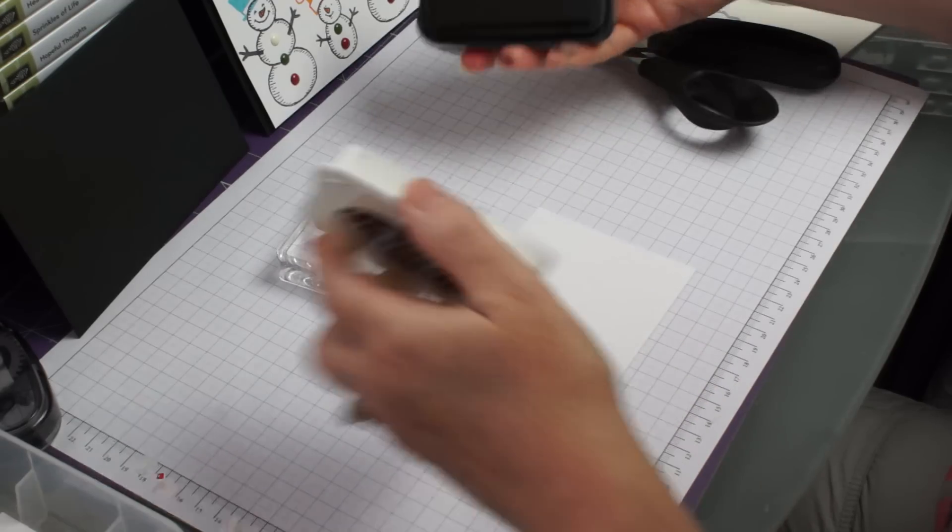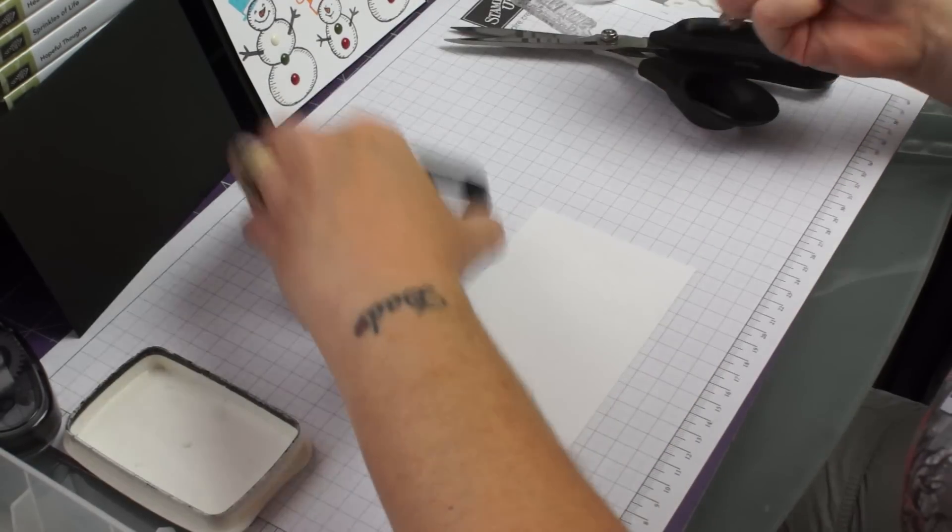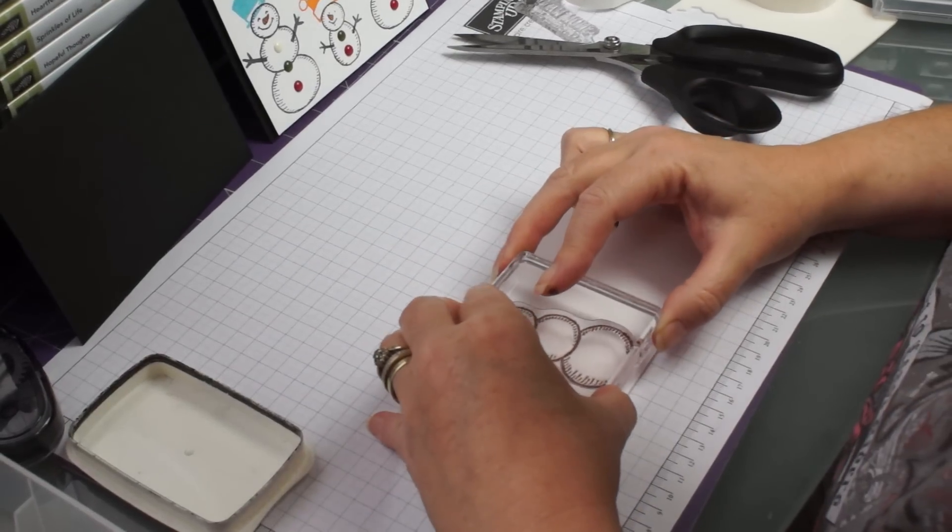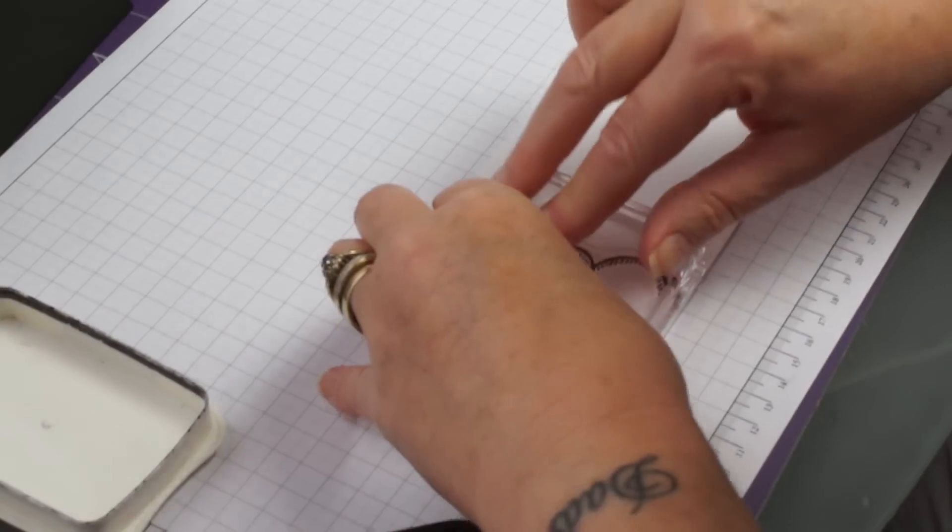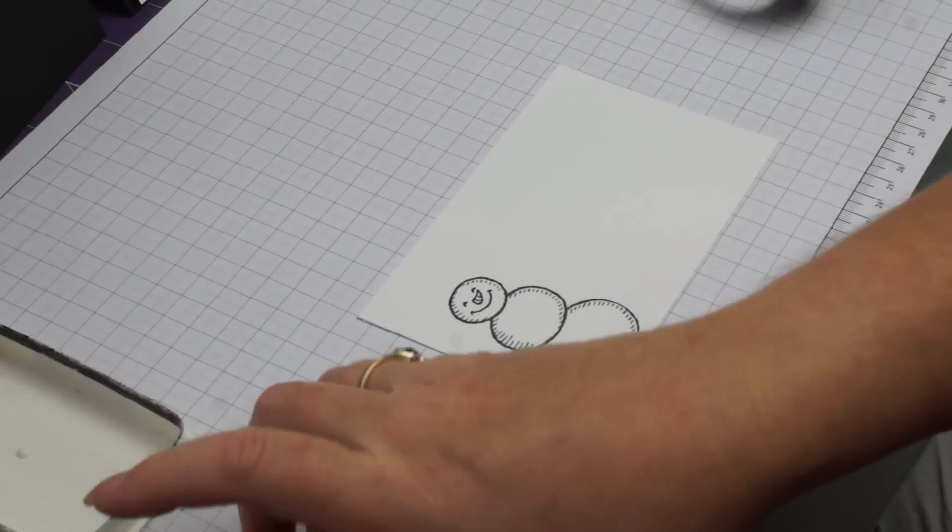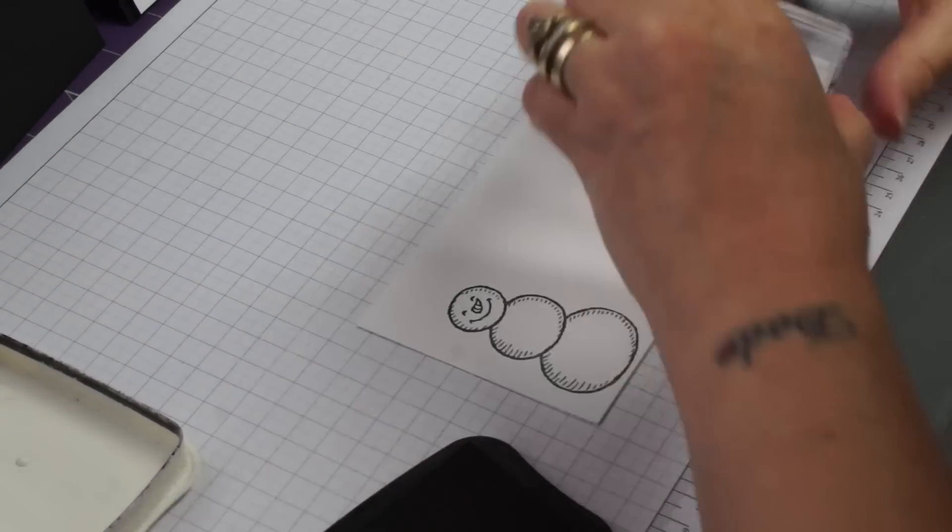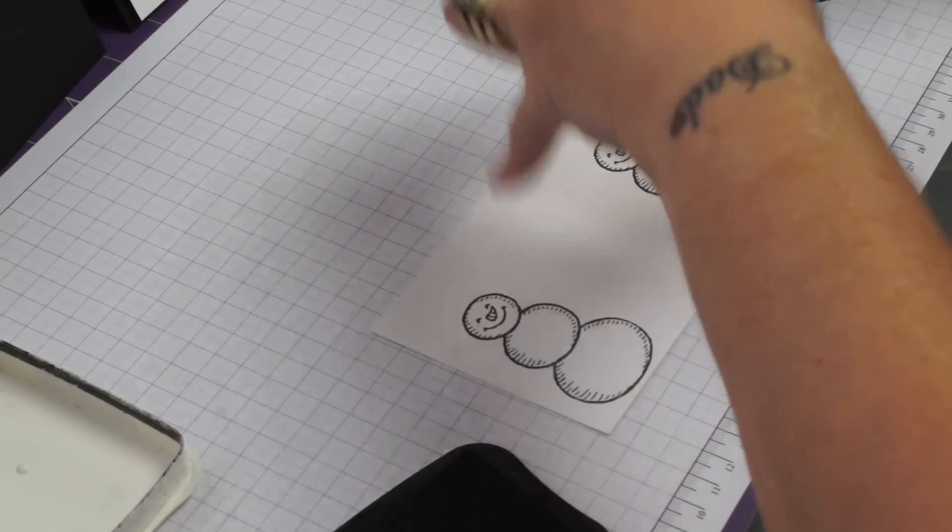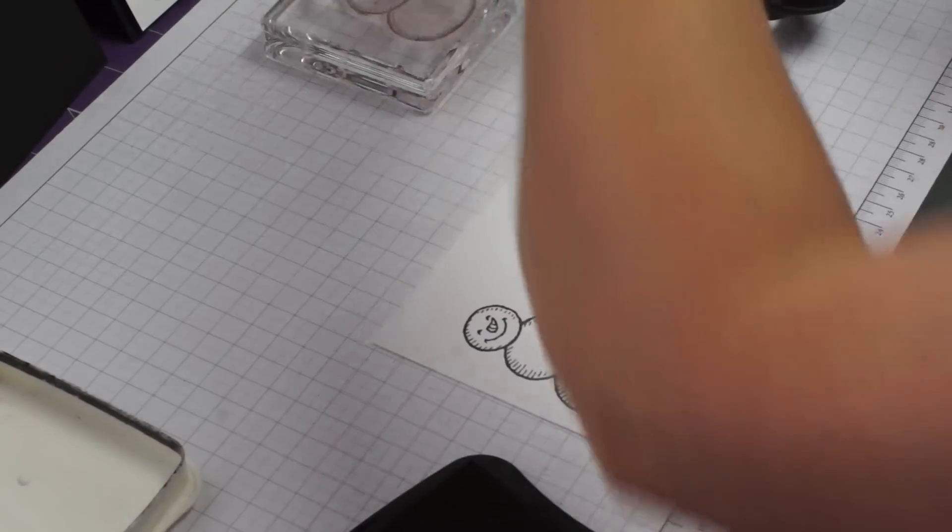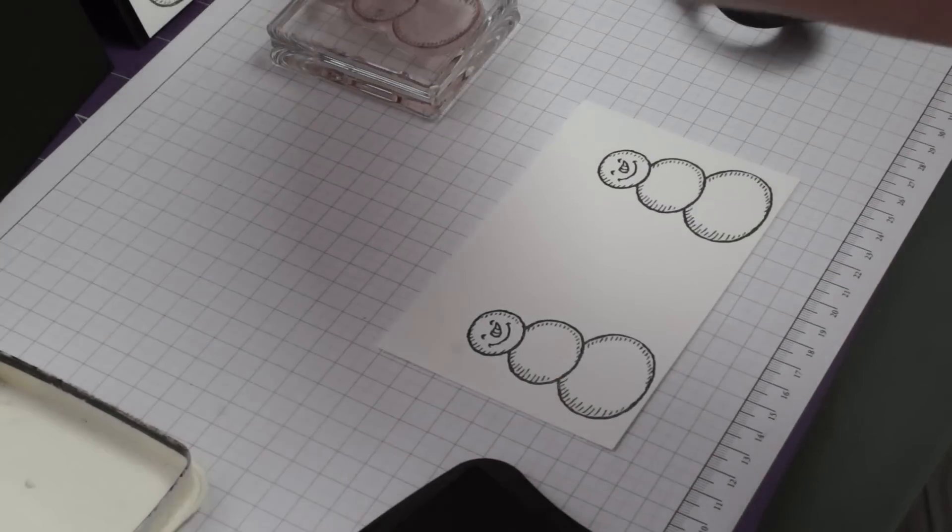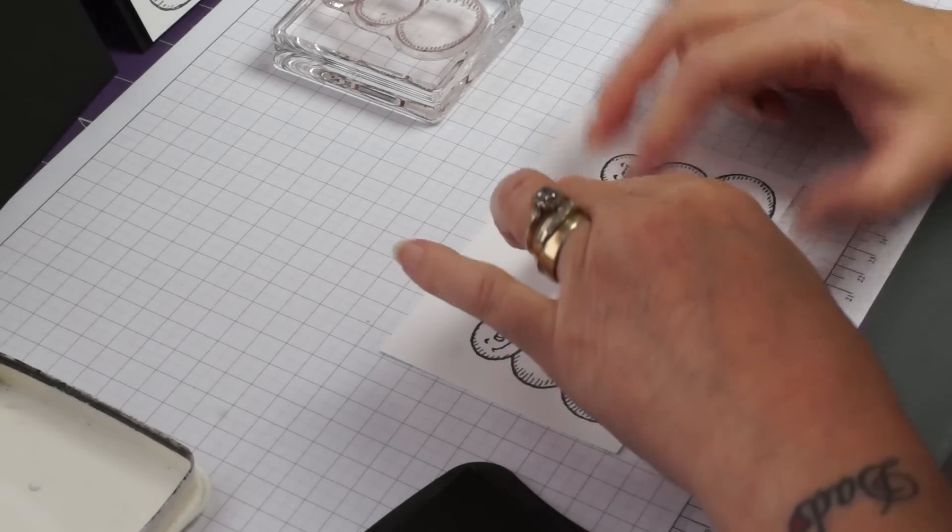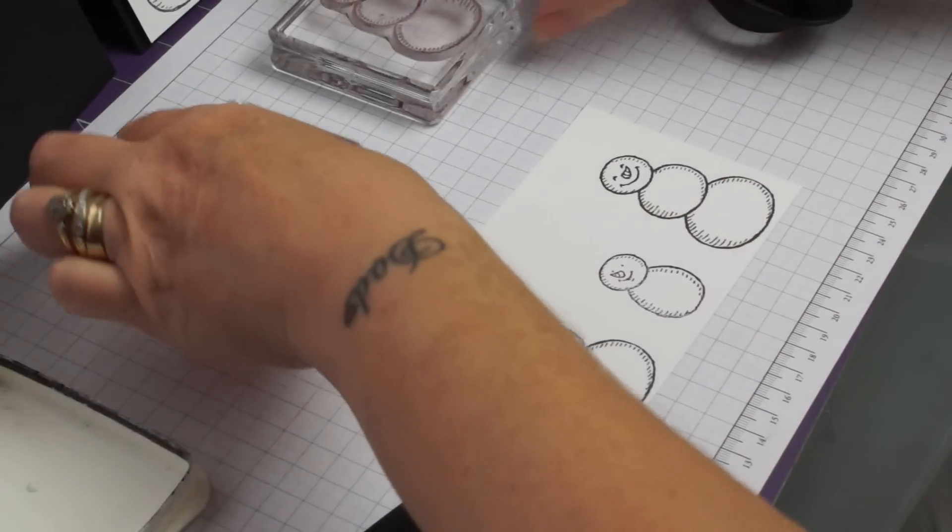And my Black Memento again. I'm getting covered in ink here, this could be disastrous. And I like to stick one person just here and another one at this end. Then my little baby again and just pop that there. So there we've got our three snow people.